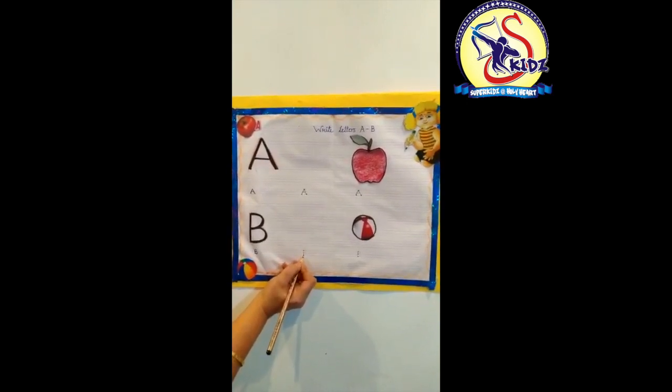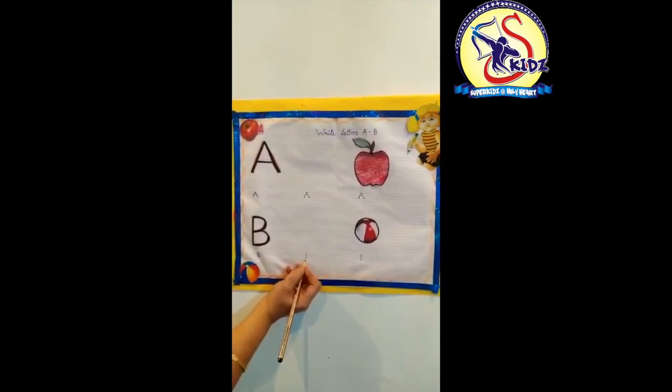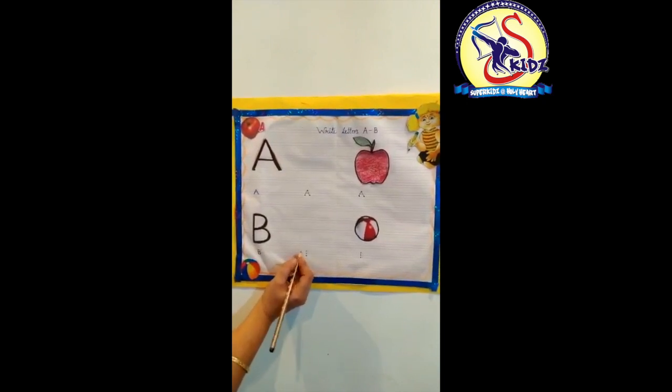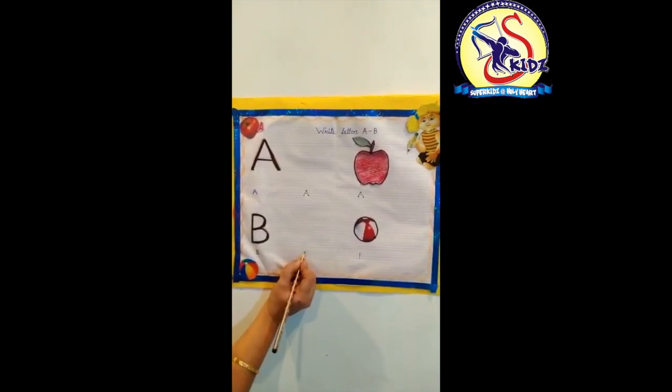One, two, three. There are three dots. Now we will join these dots. Now we will join these dots with the standing line.